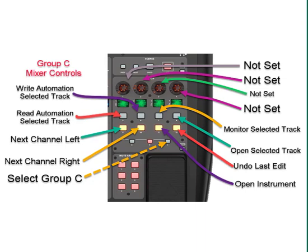Button 9 allows you to go from track to track — when you hit button 9, your tracks will go to the left one by one. Button 10 lets you select tracks to the right one by one. Button C11 will open up the instrument — so if you have an instrument track selected, C11 will open that instrument up. And the last button, C12, I made it an undo button. So if you do an edit and you're on the C tab, you can pop that button and it'll undo the last thing you just did.